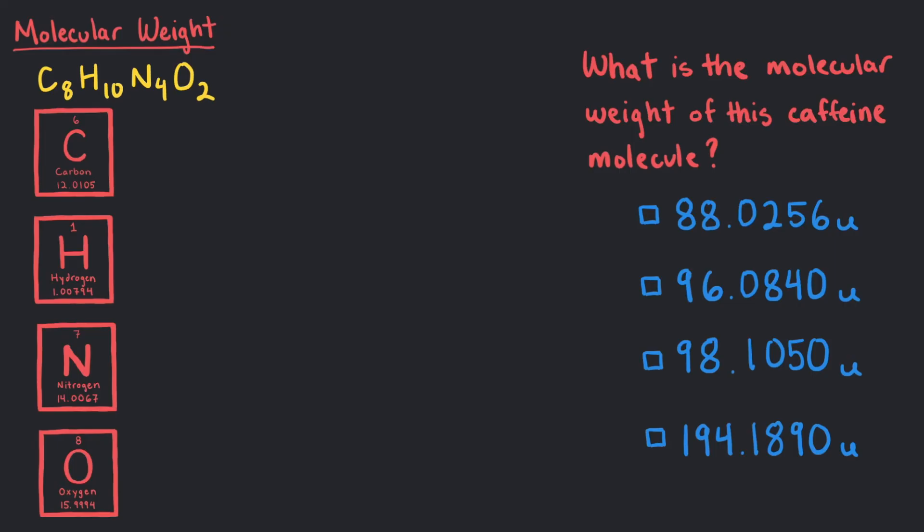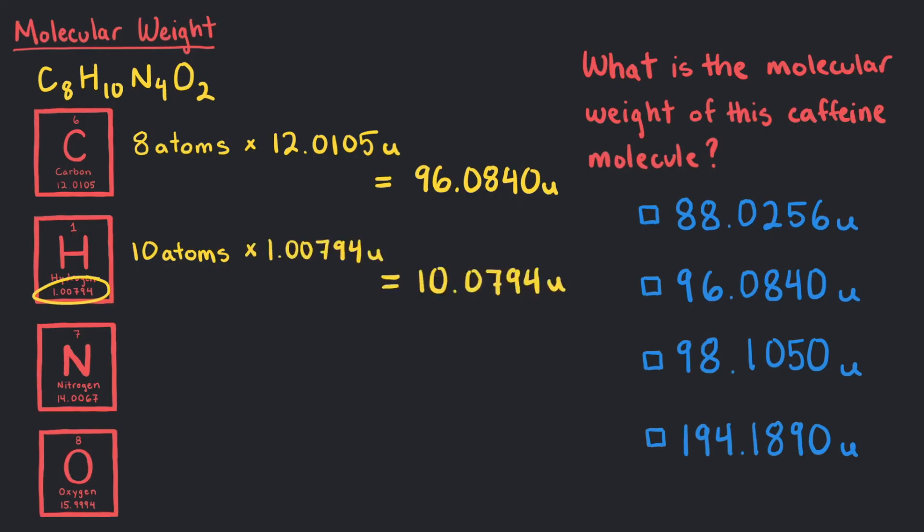Each carbon atom has an atomic weight of 12.0105U. So 8 atoms times 12.0105U gets us 96.0840U. Each hydrogen atom weighs 1.00794U. So 10 atoms times 1.00794U equals 10.0794U.